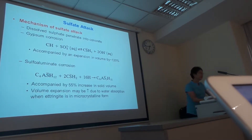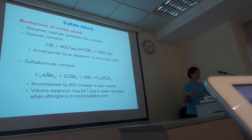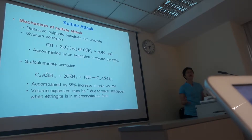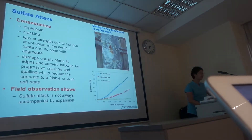So when the formation of gypsum and ettringite and absorption of water by microcrystalline ettringite occurs, it leads to an increase in volume. As a result, it generates internal stress in the concrete. When the stress exceeds the strength of the concrete, you will have cracking, and eventually deterioration of the concrete.